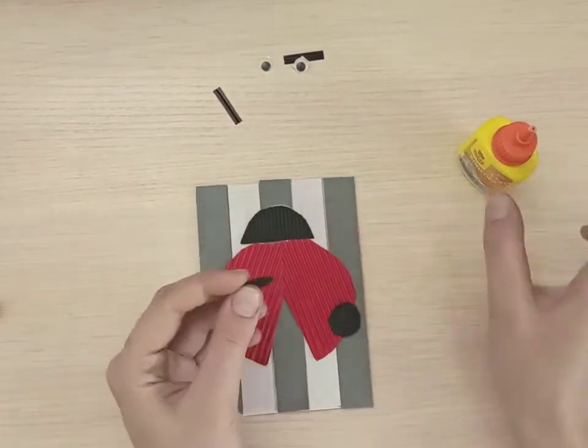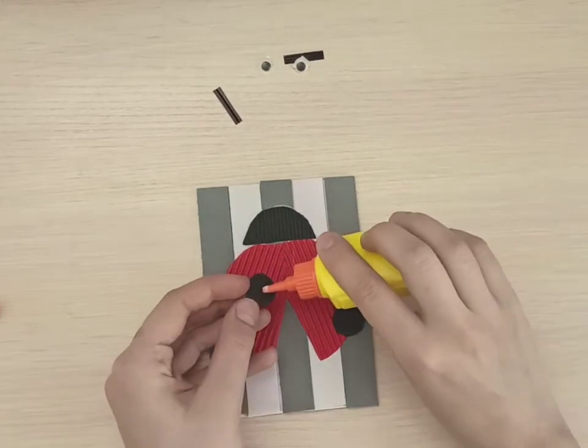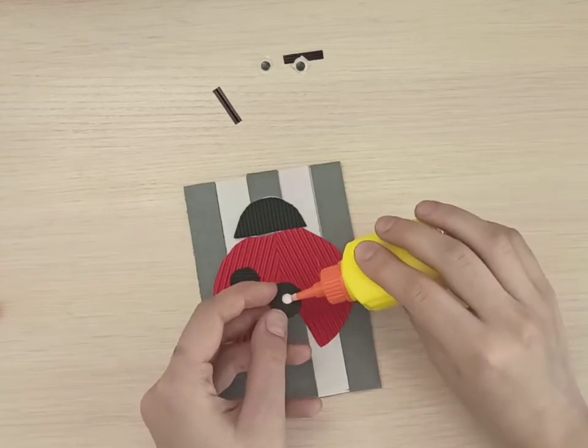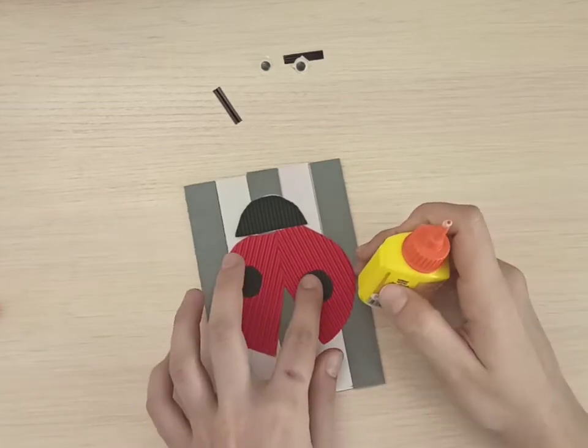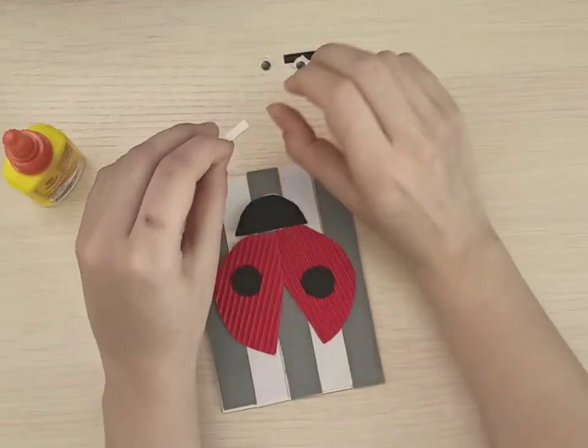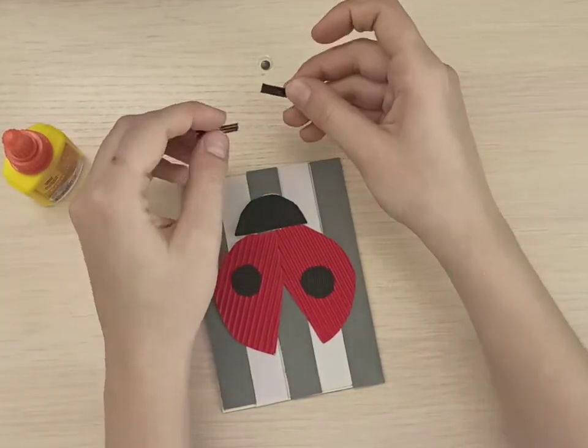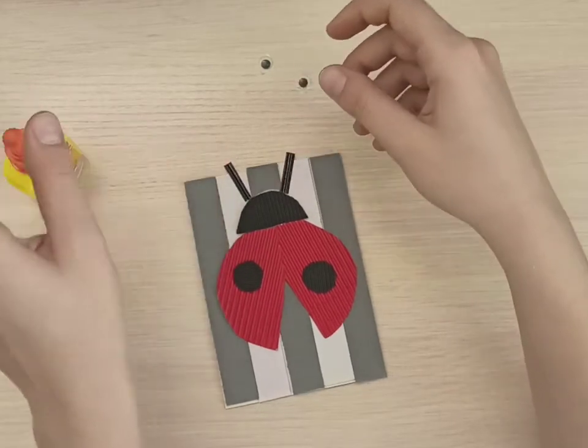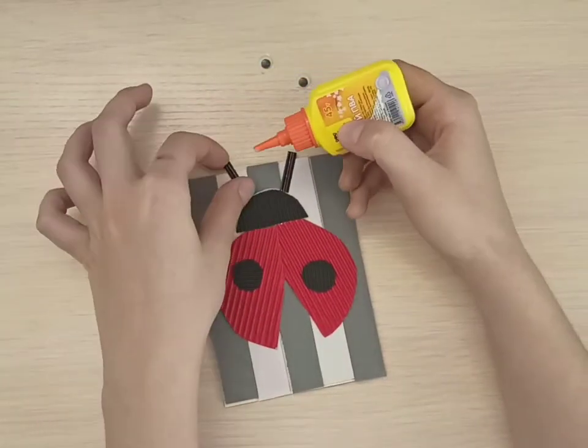And with the same glue, we paste black dots, one and two. Now please take the long black lines and also use glue.